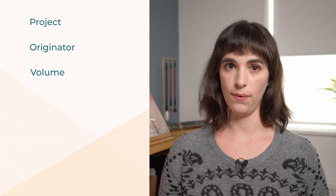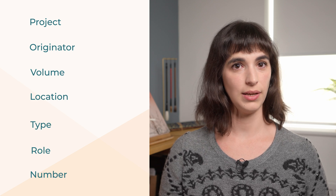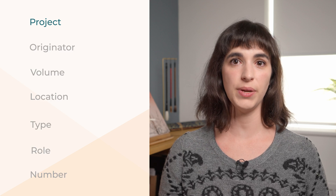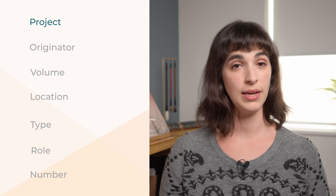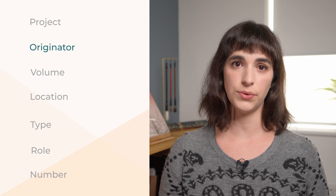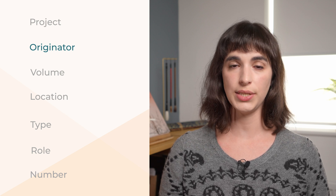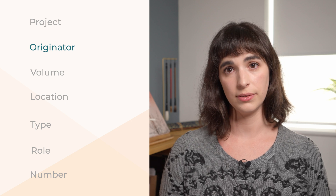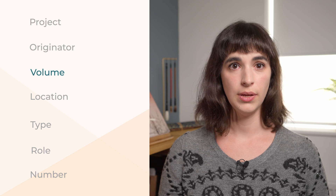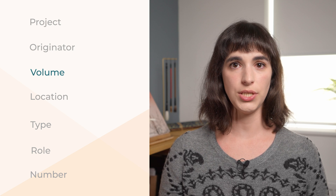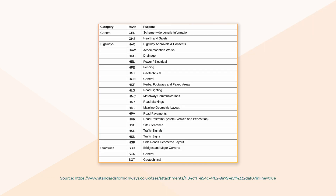GG184 proposes a template for naming drawings. The project is a unique identifier the company specifies according to its archiving system. After that, we state the originator — usually a three-letter combination used to identify the company or council, like TFL for Transport for London. Next is the volume, which is standardised and can be found in GG184 Appendix A. There are three-letter combination codes that indicate the purpose of the drawing — the discipline code. For example, HKF refers to highways, kerbing, footways and paved areas; SBR refers to structures, bridges and major culverts.